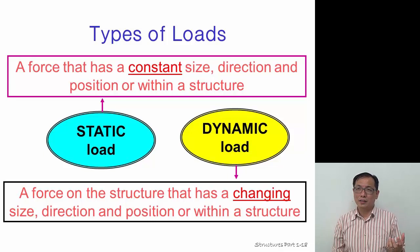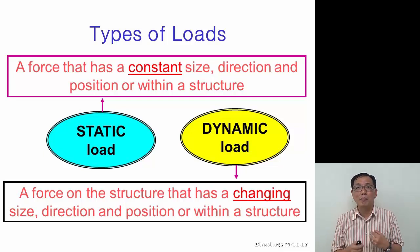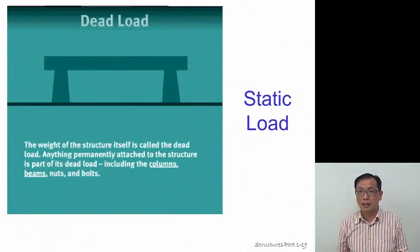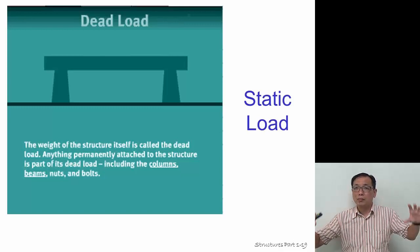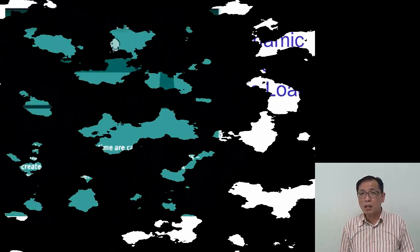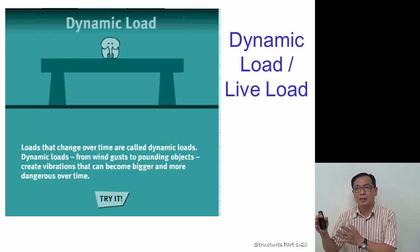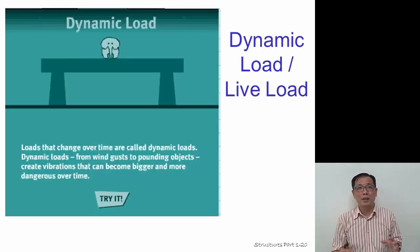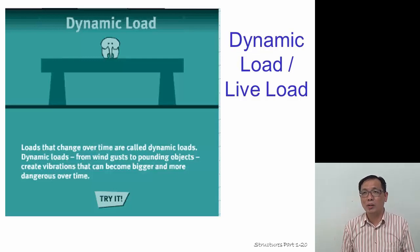We have two types of loads: static loads and dynamic loads. A static load is a force that has a constant size, direction, and position — for example, a dead load where a heavy beam sits on a column. A dynamic load changes, such as when an elephant walks across or when wind blows onto a beam causing it to move. That is a dynamic load, also called a live load.